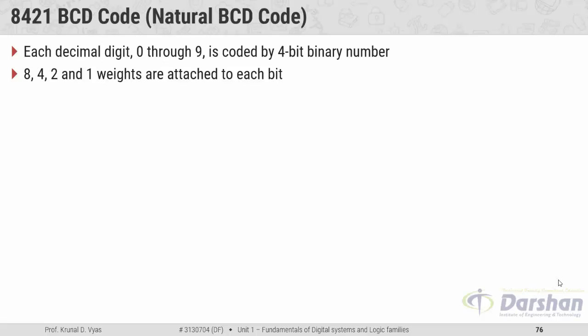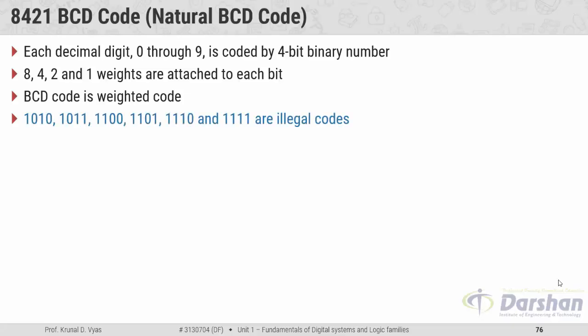The another name of BCD code is 8421 code, because weights are attached — that's why BCD code is a weighted code. Here 1010, 1011, 1100, 1101, 1110, and 1111 are illegal codes. These six codes are illegal because in the hexadecimal to binary table, alphabets A to F represent 10 to 15 in decimal, and their binary forms are 1010 to 1111 — so we have six illegal codes.